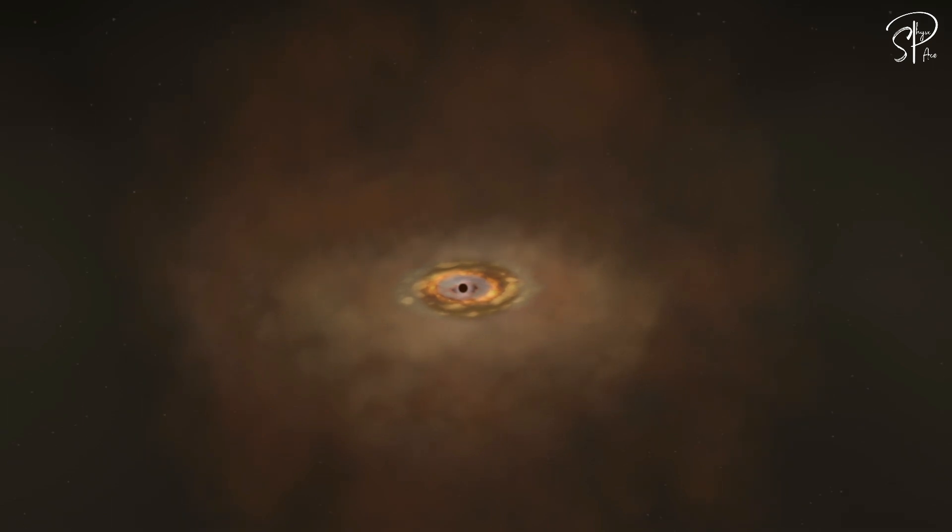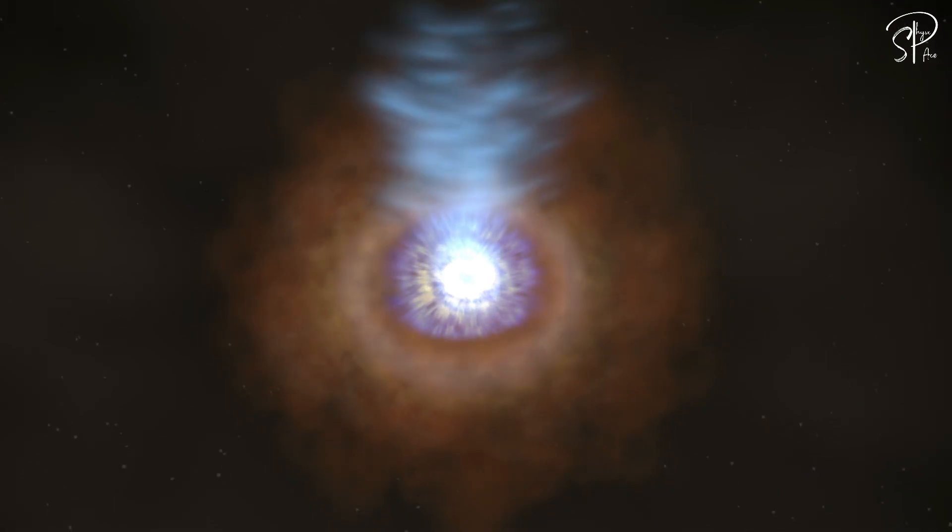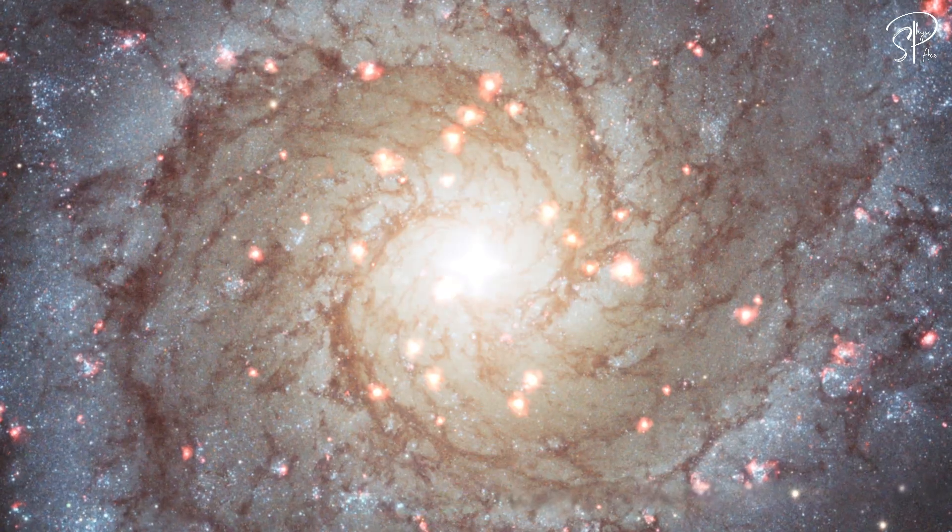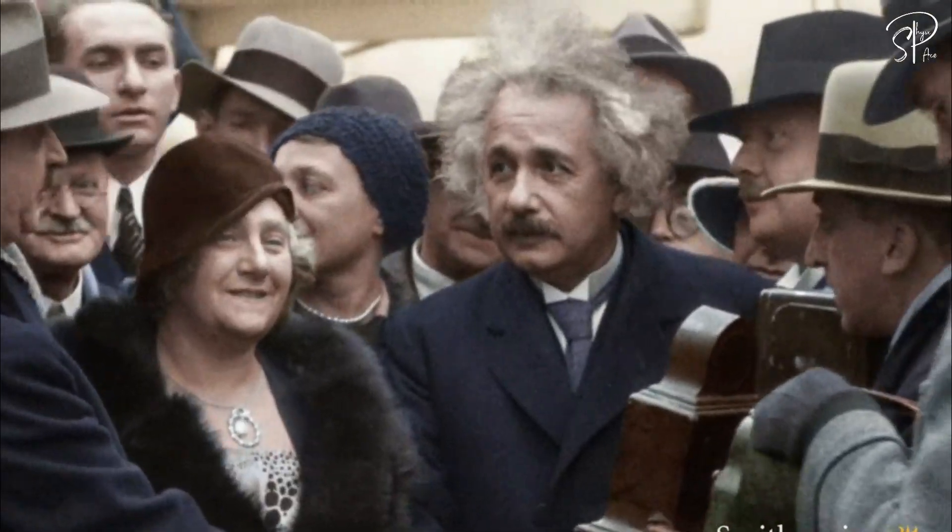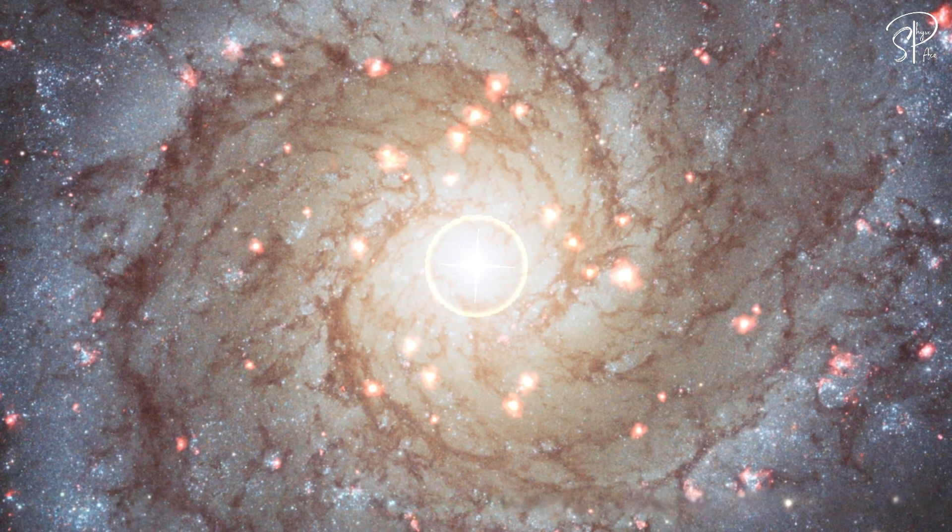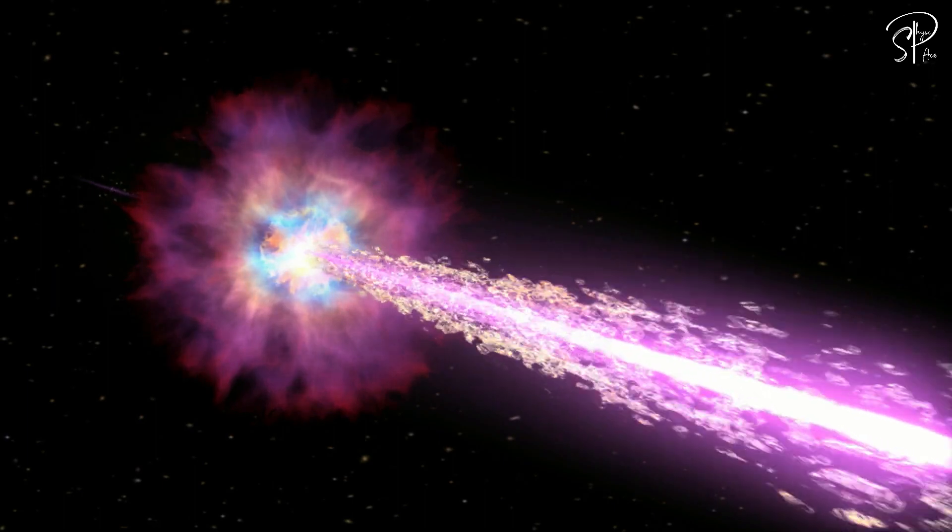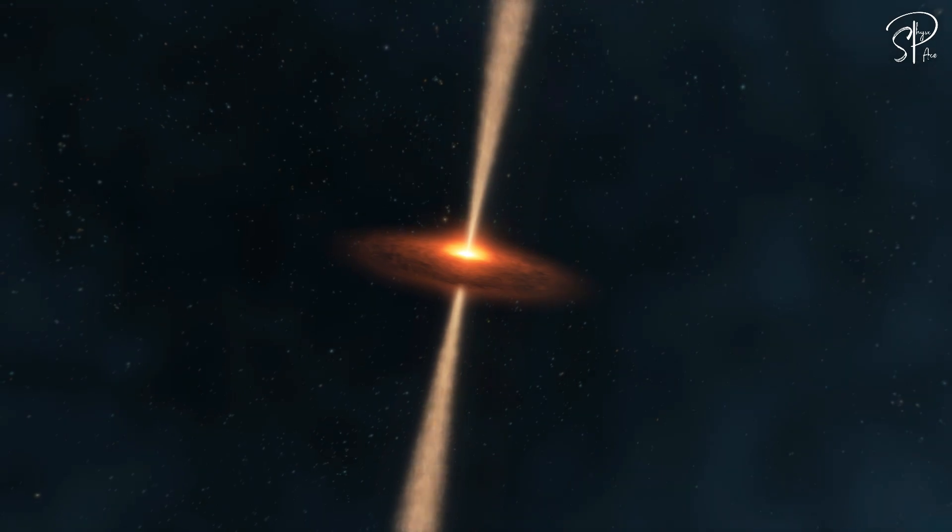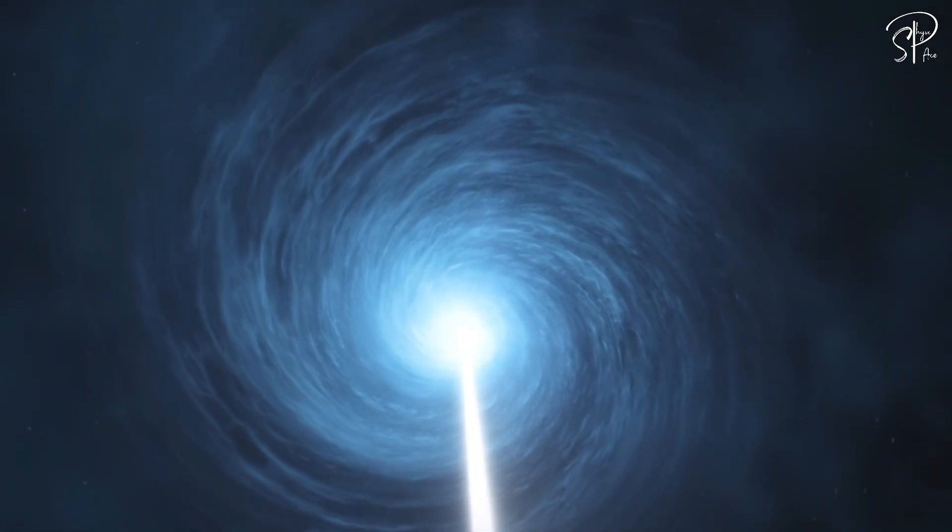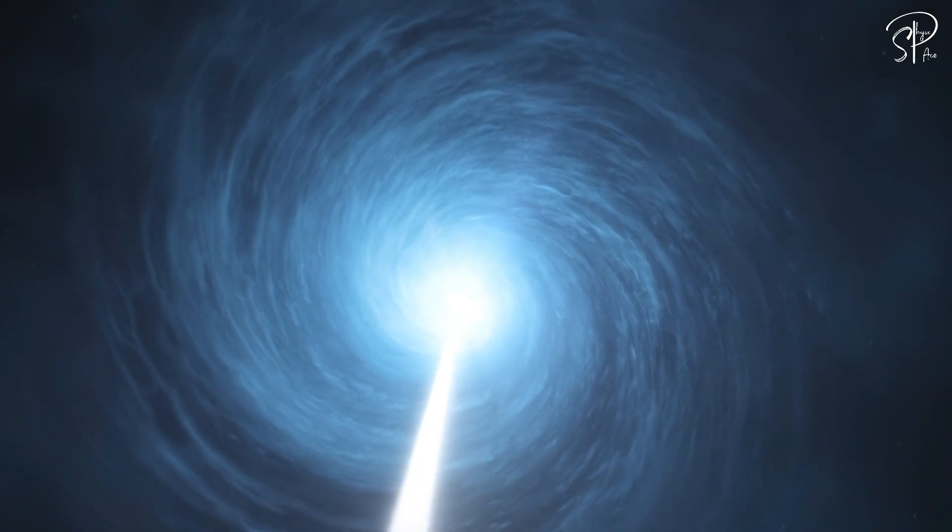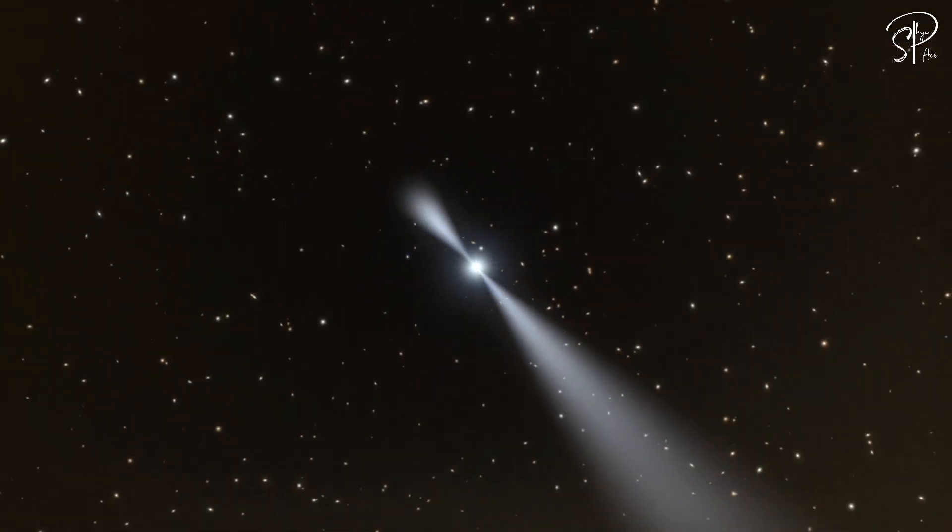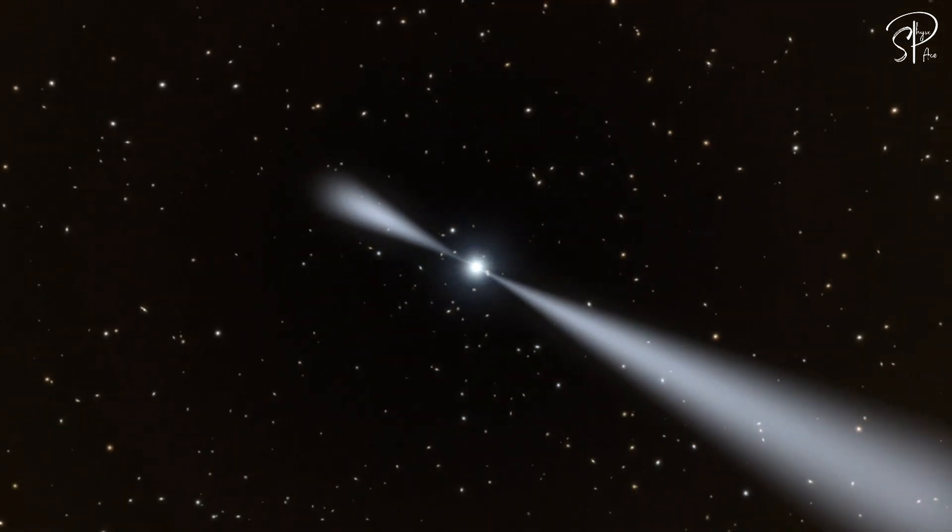The orientation of these jets offers valuable insights into the nature of this extraordinary cosmic phenomenon. One fascinating aspect of these jets is their validation of a key prediction of Einstein's special relativity: relativistic beaming. This phenomenon causes any source moving toward Earth to appear brighter, while a source moving away from Earth appears dimmer. Consequently, a jet directed toward Earth will seem brighter, while a jet moving away will appear dimmer.